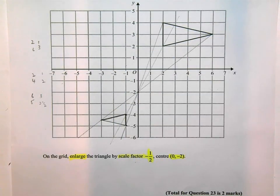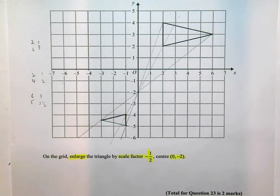And there's your result. There's your triangle, which is an enlargement. The scale factor of minus a half of that triangle. Leave all your guidelines there. This will allow you to get full marks in this question. It's two marks.